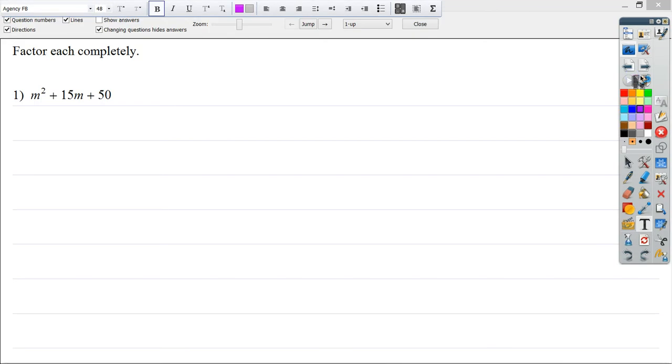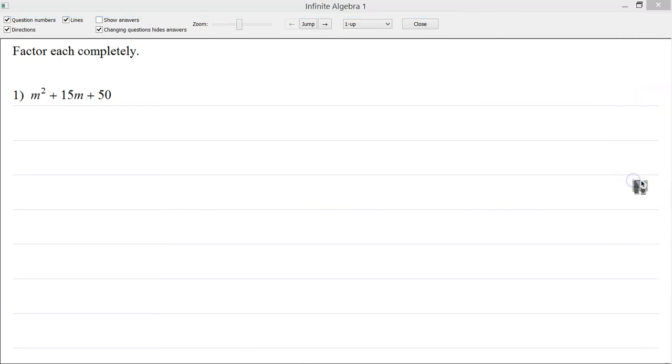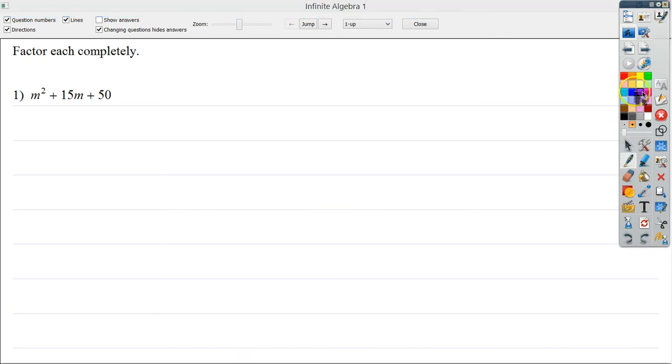In the first set, it says m squared plus 15m plus 50. Now the beautiful thing about this problem, essentially, is the fact that it's not that hard to do. What I'm looking for, what I tend to look for first when I do them, and you may do something different, I tend to look at the sign that's here first. So if I start out looking at that second sign, it tells me a lot of useful information.